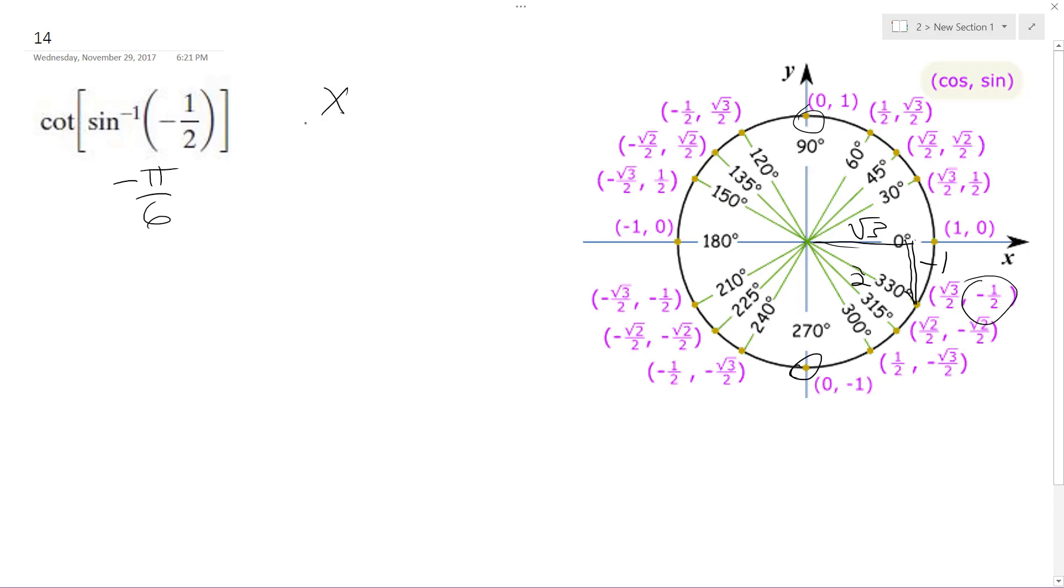Cotangent's equal to x over y, so it's the inverse of the tangent, which is y over x. So in this case, it's going to be equal to root three over negative one. So in this case, what we end up with is just negative root three.